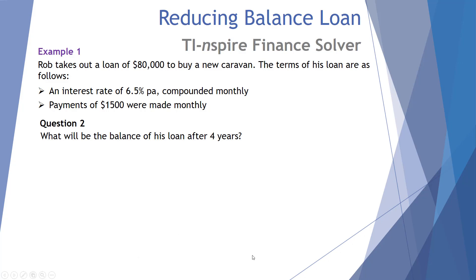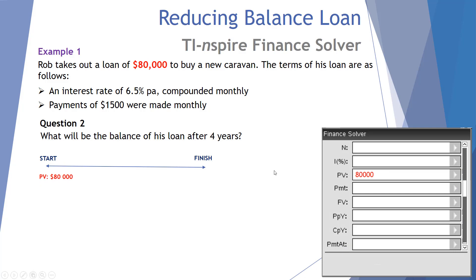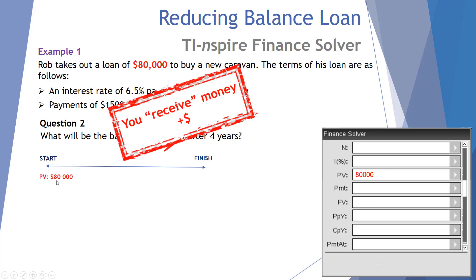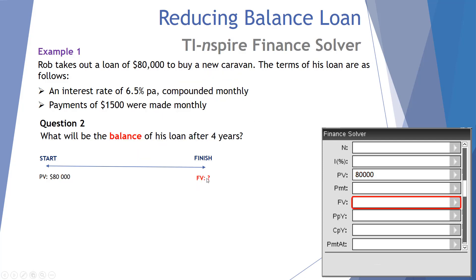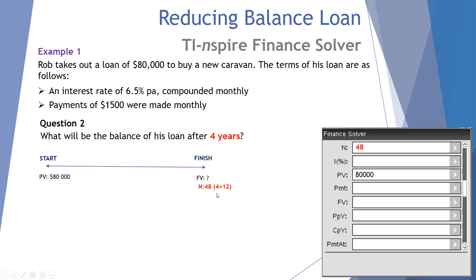Question two: what would be the balance of Rob's loan after four years? Everything else remains the same, we just want to know what happens after four years. Starting with a principal of $80,000 — positive because it's money received from the bank. The future value after four years is our unknown, so it's left blank on the CAS calculator. We know the duration is four years.